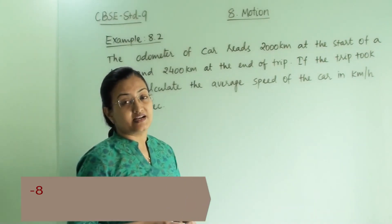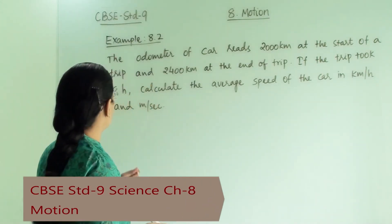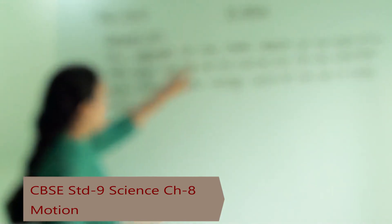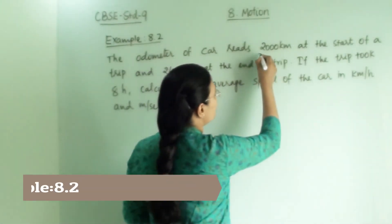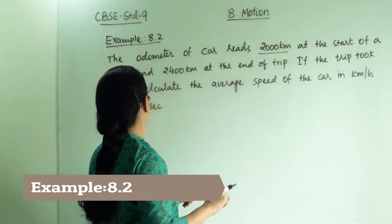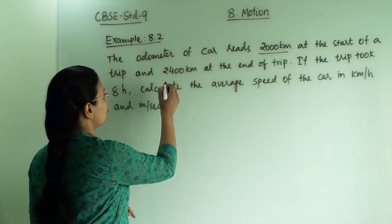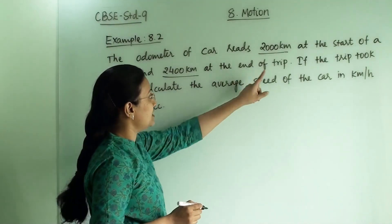Let us now understand example 8.2. The odometer of a car reads 2000 km at the start of the trip and 2400 km at the end of a trip.